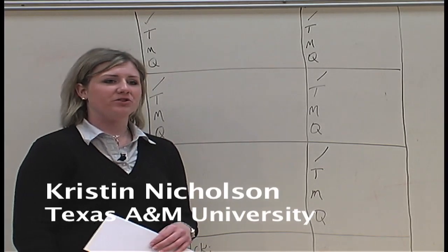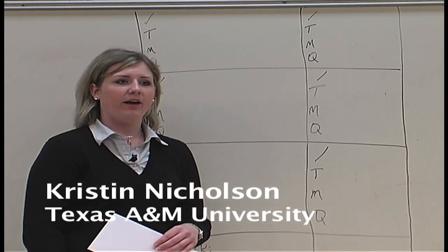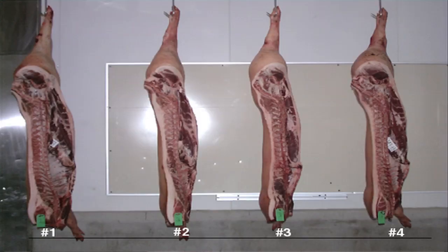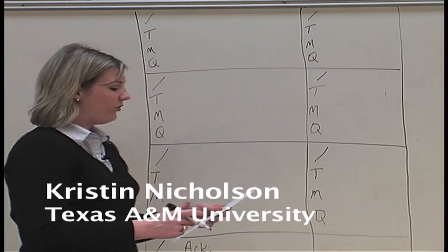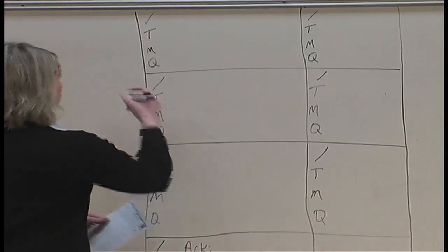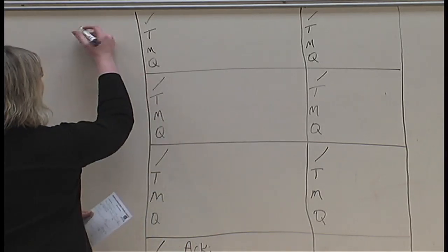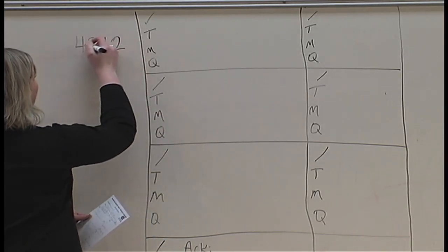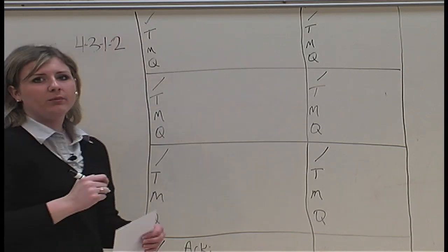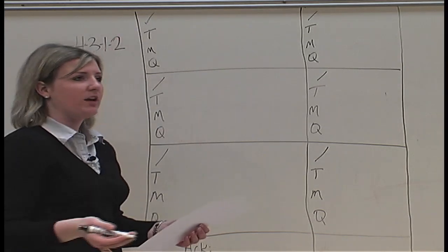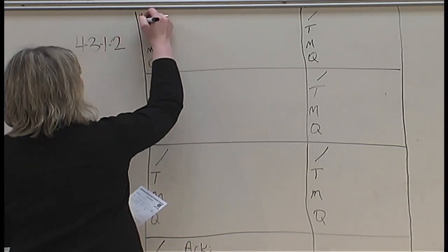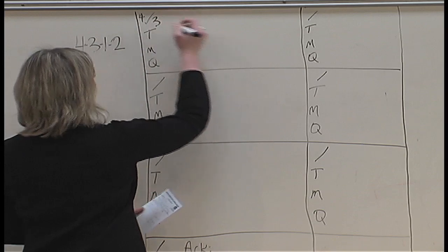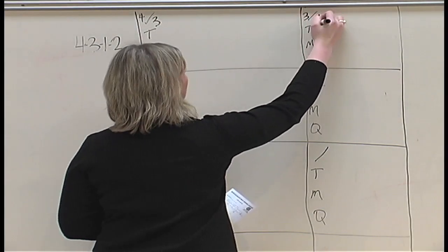As you'll notice on this website, there's a pork carcass class, and we're going to use this class to illustrate note-taking on this particular class. If you've already gone through the class, it was placed 4, 3, 1, 2. The first step that we want to do is go through and put our numbers here.